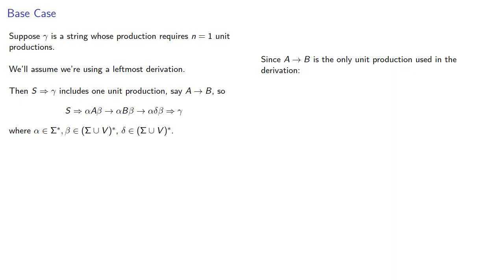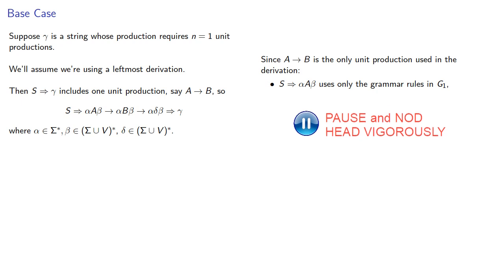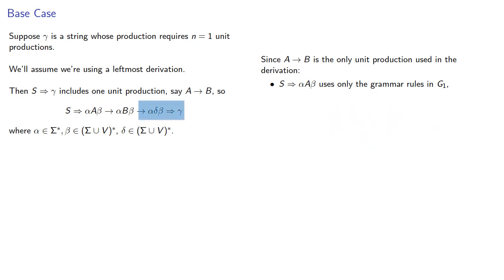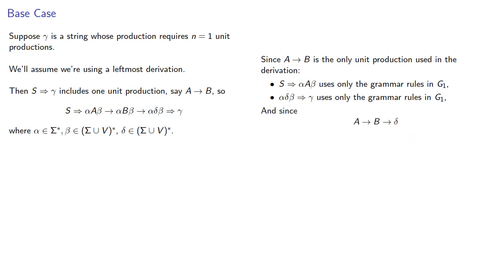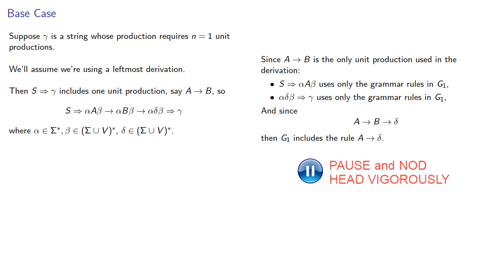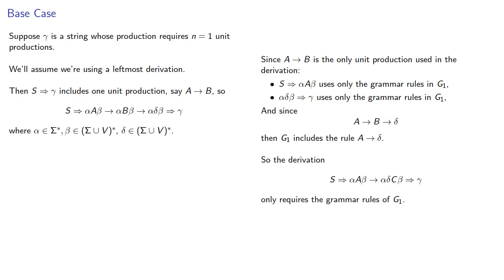Since A produces B is the only unit production in the derivation, the next step must use a production rule of the form B produces delta, where delta is some string of terminal symbols and variables. And from there we can complete our derivation to produce gamma, the string in our language. Since A produces B is the only unit production, the first part uses only grammar rules in G1. The last part also only uses grammar rules in G1. And since A produces B produces delta, then G1 must include the rule A produces delta. So this derivation only requires the grammar rules of G1, and consequently gamma is in the language of G1.